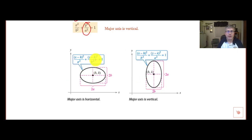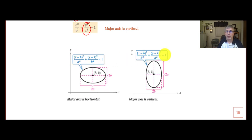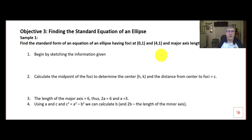And this is what they would look like graphically. When the major axis is horizontal, a squared is larger and is the denominator on x. With a taller ellipse, the major axis is vertical and a squared is the denominator under y.